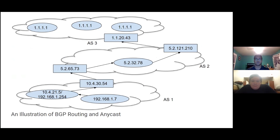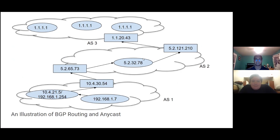Here you can see an example of how BGP routing and Anycast work. Starting at AS1, which we can assume is your home computer at 192.168.1.7, a private IP address, that goes to your home router, which turns it into a public IP address and sends it to your closest BGP router for your ISP. That ISP sends it to an intermediate ISP with which it has a peering or transit agreement, which then sends traffic to your destination BGP router, which then has a choice of which specific Anycast server to send the data to — in this example, the one closest to that BGP router.